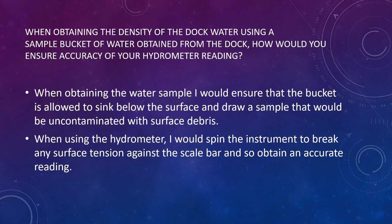The next question — a follow-up — is: when obtaining the density of dock water using a sample bucket of water obtained from the dock, how would you ensure accuracy of your hydrometer reading? You use a bucket and rope arrangement, lower the bucket, and obtain a sample of dock water, filling it to about 95% of the bucket's height. You then suspend the hydrometer, give it a quick spin to break any surface tension against the scale, wait for it to settle, and read off the value.